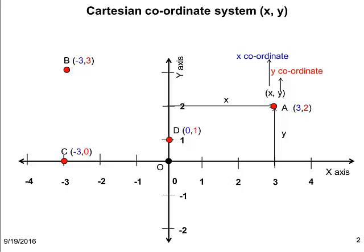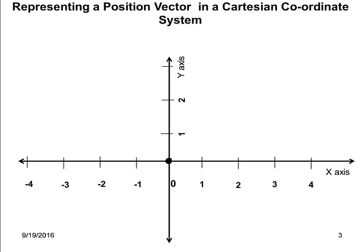Now let us discuss the representation of vector quantities in a Cartesian coordinate system. To demonstrate this, consider point A in the Cartesian coordinate system.